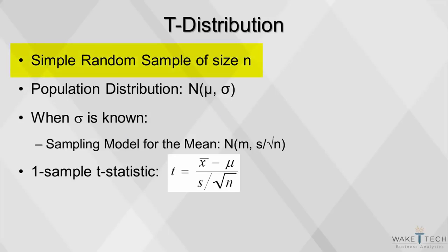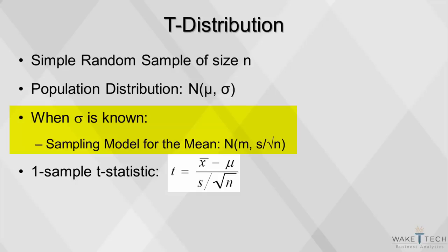Suppose a simple random sample of size n is drawn from a population whose distribution can be approximated by a normal mu-sigma model. When the standard deviation is known, the sampling model for the mean x-bar is distributed as a normal distribution, with mean x-bar and standard deviation sigma divided by the square root of n.